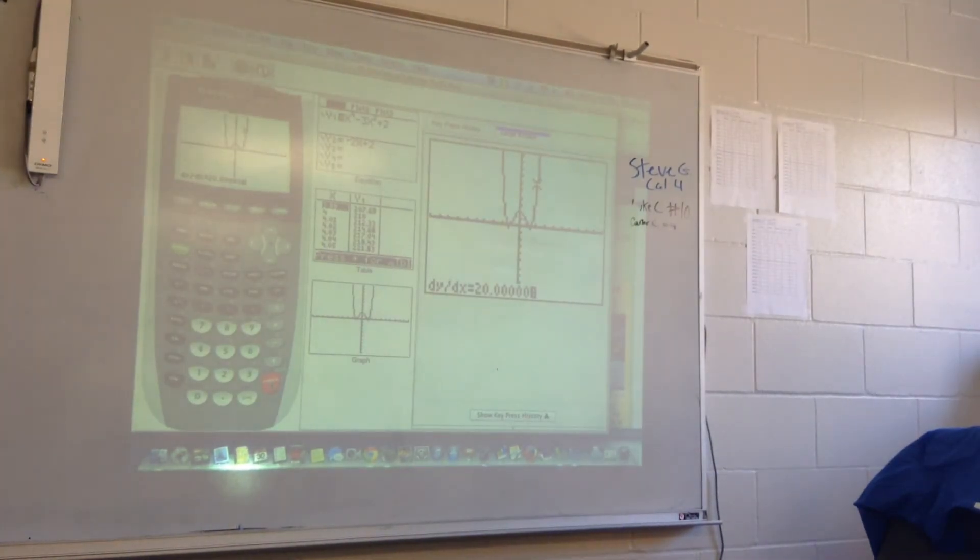Okay. So again, the way you would do that is you go second trace, or calculate, and then number six on my calculator, I'm assuming yours as well, dy dx. That's finding the derivative, or finding the value of the derivative at whatever x value you type into the calculator, and it will give you what the slope of the tangent line is at that moment. Okay.